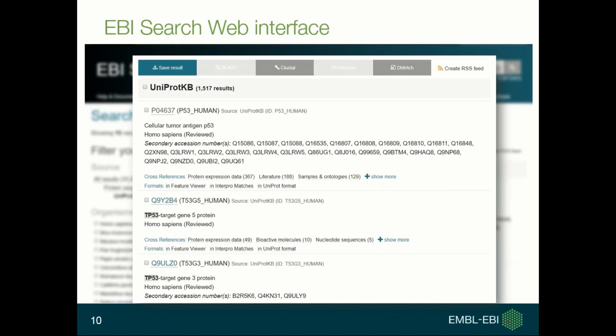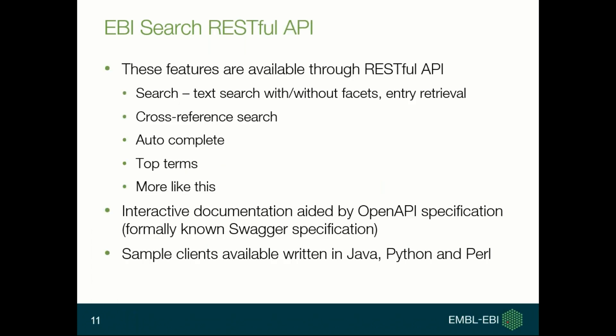Now I'm going to move to RESTful web services. You can find these features through the RESTful API: text searching with facets, cross-reference searching APIs so you can build your own cross-reference network, autocomplete as a common feature available in modern search engines, a top terms API to return popular terms from a specific field which can give you a hint of data characteristics, and a 'more like this' API to find similar entries to a particular entry.